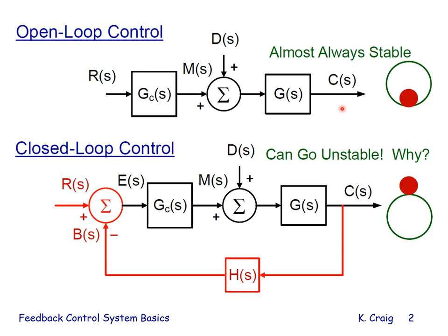The open-loop control system is almost always stable, while the feedback control system can go unstable, and we will learn why later. The difference between stable and unstable is analogous to a ball inside a hoop. If displaced from its stable equilibrium position, it rolls back and forth and eventually returns to its original position. If placed on top of a hoop in an unstable equilibrium and displaced, it will not return but simply fall off. Stability must be guaranteed before performance can even be addressed.